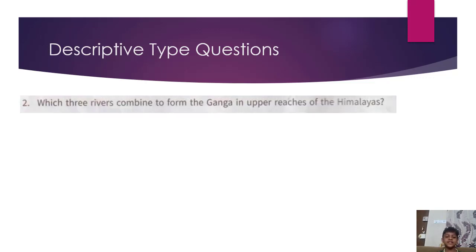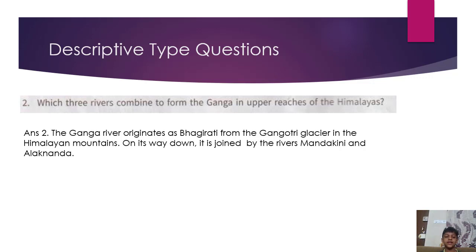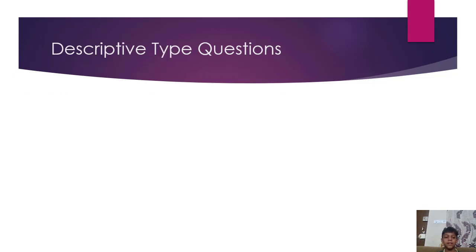Which three rivers combine to form the Ganga in the upper reaches of the Himalayas? The Ganga river originates as Bhagirathi from the Gangotri glacier in the Himalayan mountains. On its way down, it is joined by the rivers Mandakini and Alaknanda.